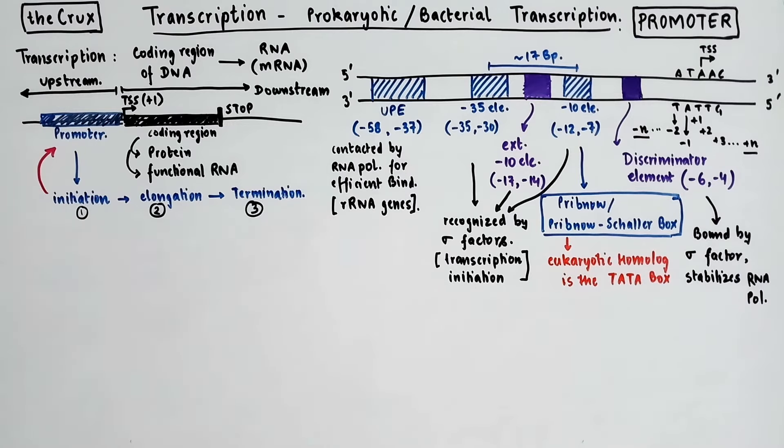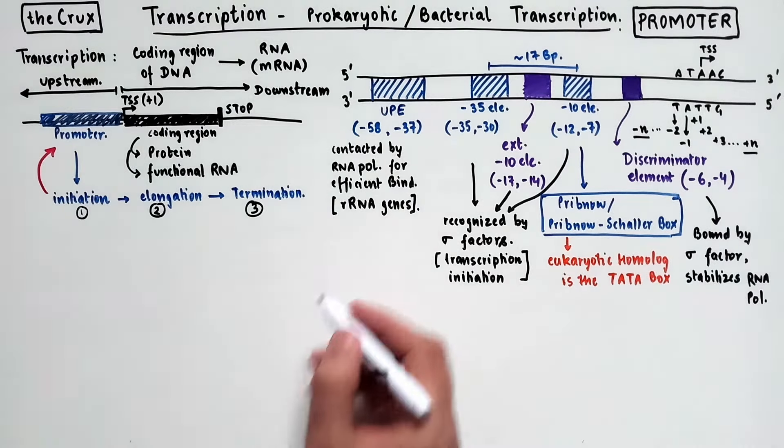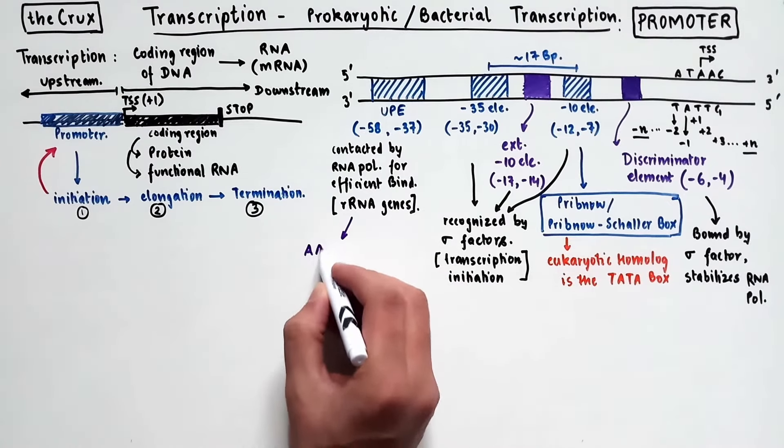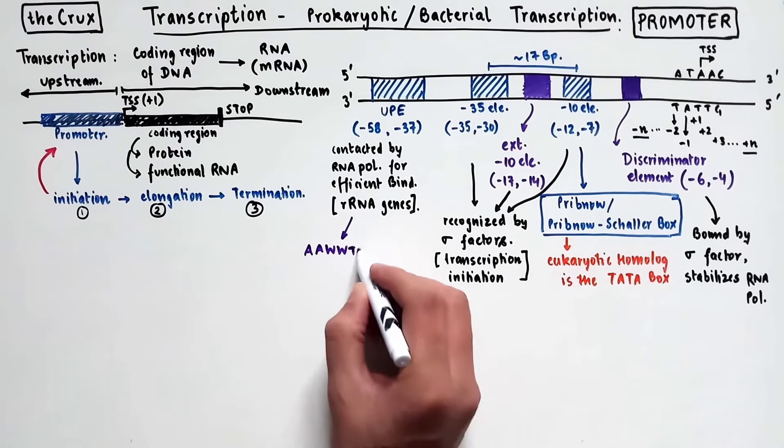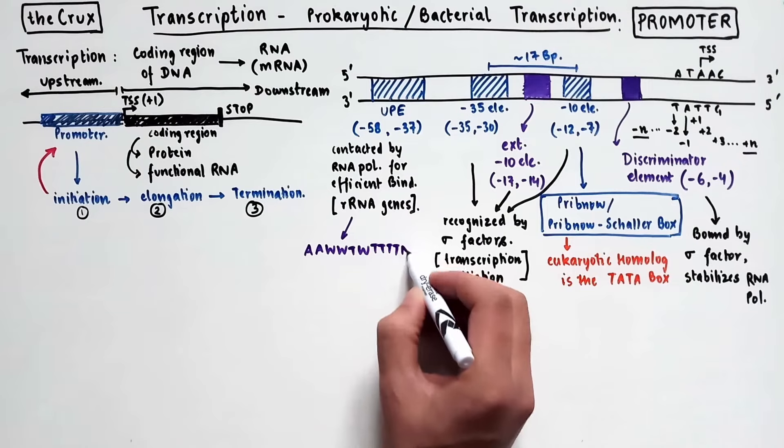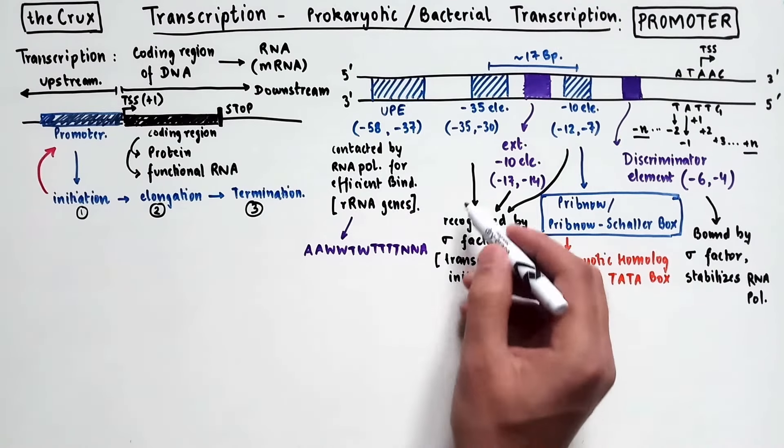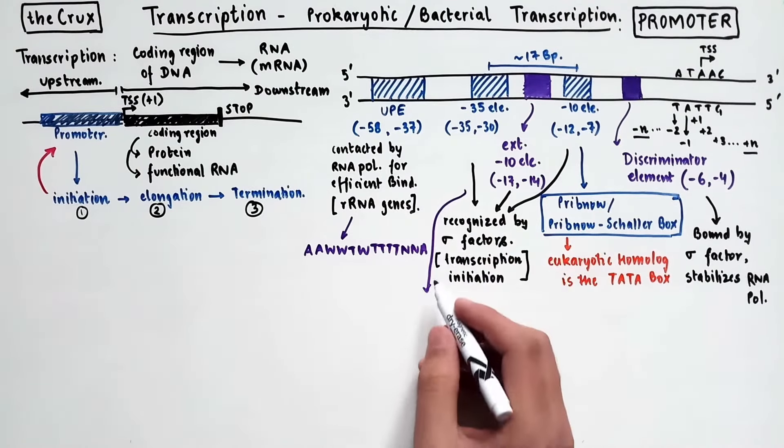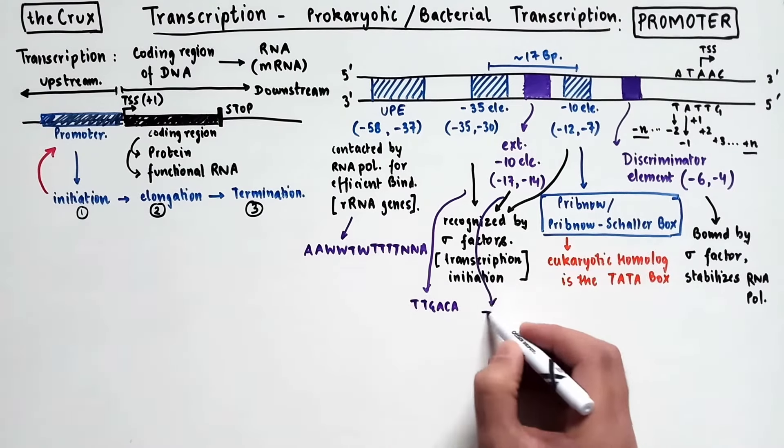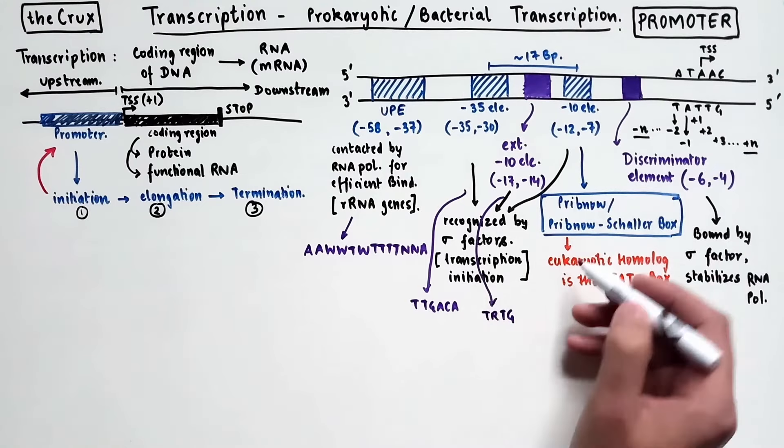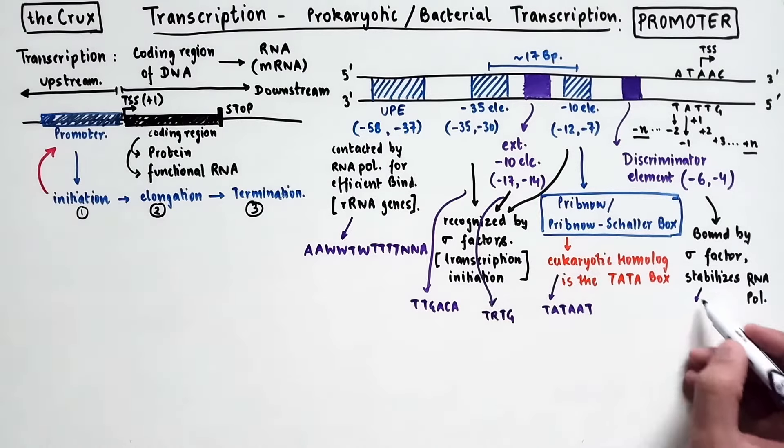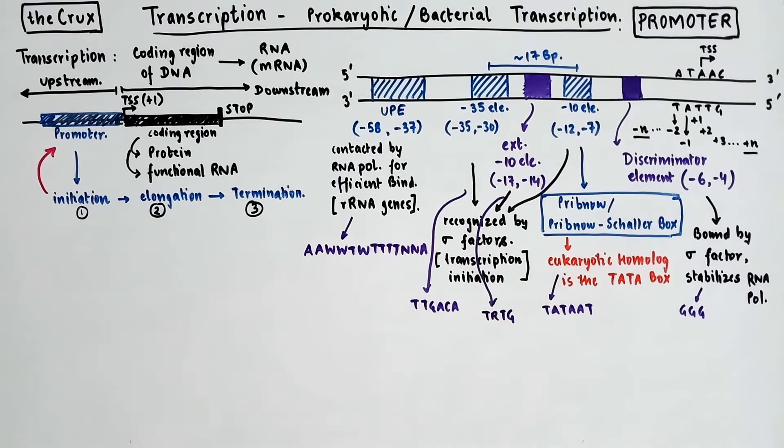When looking at the sequence structure of each of these elements, they have some underlying consensus sequences. For instance, UPE has a long consensus. The Ws and Ns that you see in the sequence are IUPAC symbols. Check out the link in the description to learn about their meaning. The negative 35 has Ttgaca as its consensus sequence. The extended negative 10 has Trtg as its consensus. And the negative 10 element has Tataat as its consensus. And then the discriminator is usually just a G triplet.